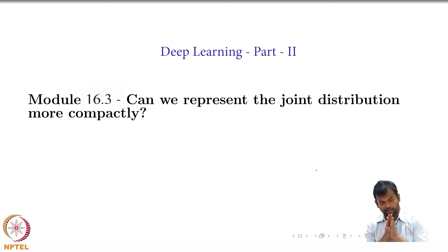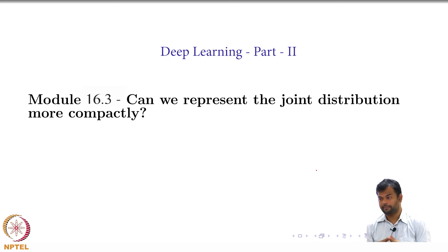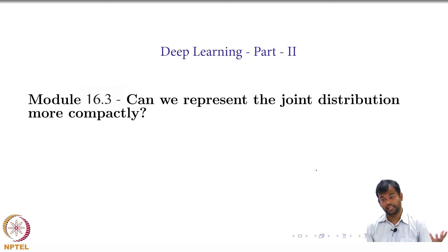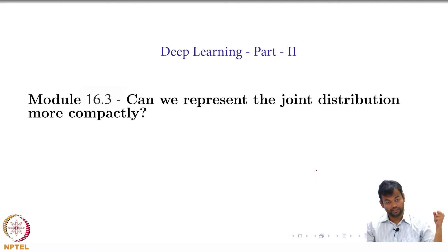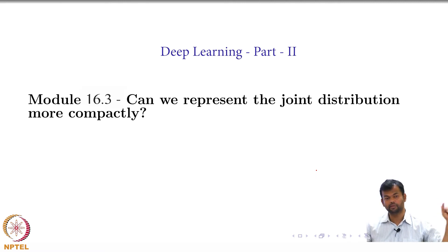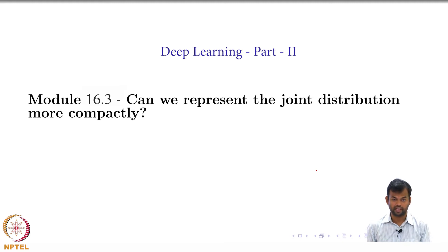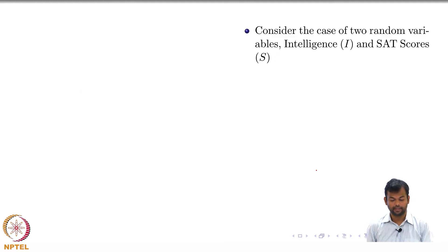The quest is: can we take this joint distribution and represent it more compactly? That is, I need all these values — I want to be able to immediately get them — but I do not need to really store 2^(n-1) parameters.